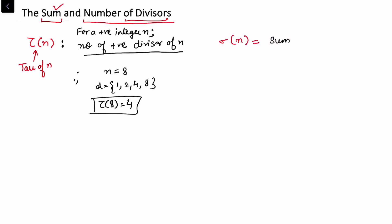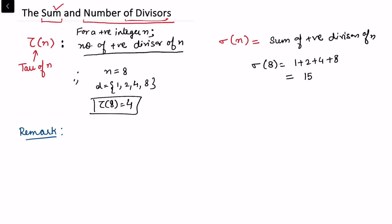Sum of divisors is written as sigma(n) — this is the sum of positive divisors of n. In the same example, sigma(8) = 1 + 2 + 4 + 8 = 15. So we can see that tau(1) = 1, tau(2) = 2 since there are two divisors of 2.